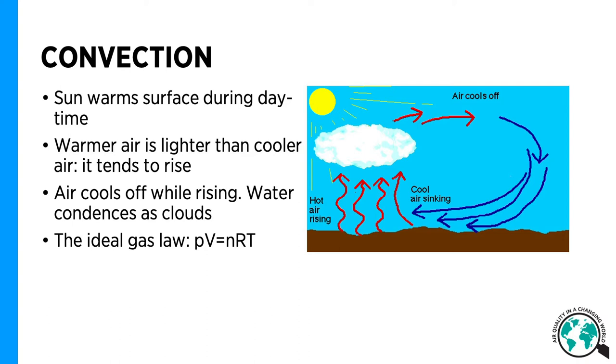The sun warms a surface and hot air above the surface is lighter than the air above and starts to rise. When rising, the air cools off and reaches supersaturation. Water condenses as clouds.